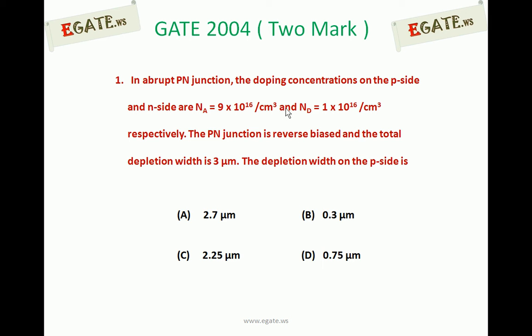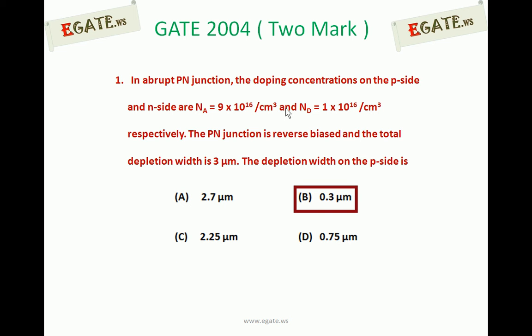Given: abrupt p-n junction with acceptor concentration Na = 9×10¹⁶ per cm³ and donor concentration Nd = 1×10¹⁶ per cm³. The p-n junction is under reverse bias and the total depletion width is 3 micrometers. The correct answer for this question is B, which is 0.3 micrometers.